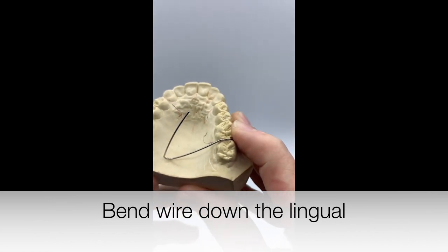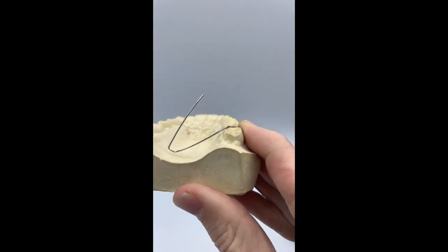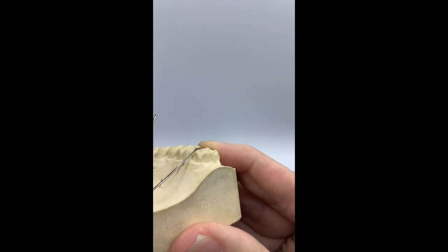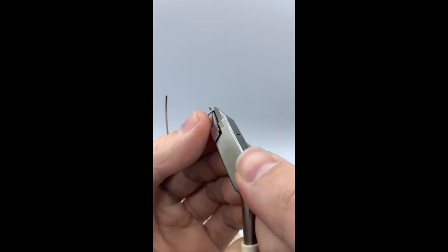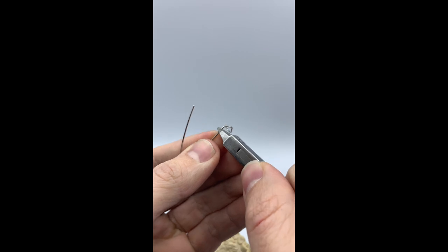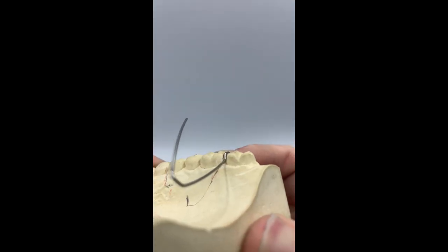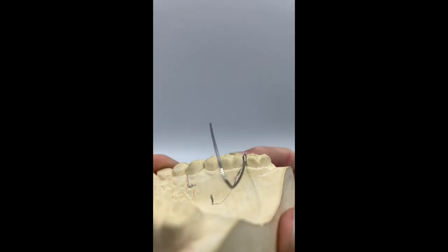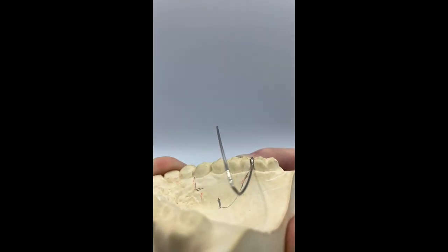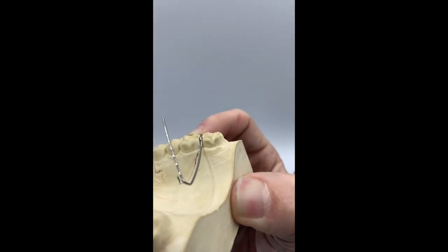When bending down into the lingual surface, we want to make sure we follow the lingual surface of the tooth downwards, almost so it fits like a little cap as seen in the picture above. The wire should fit nicely on the tooth with no space between the wire and the tooth.